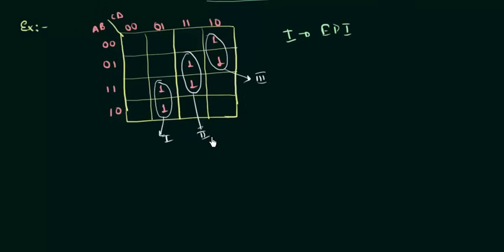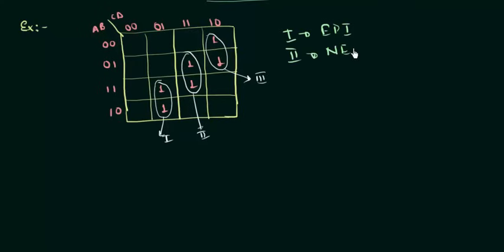Now let's see for the second group of ones. This is also a prime implicant because it is the largest possible group here. But it is not an essential prime implicant. Why? Because this one can easily be combined in another way, and this one can also easily be combined in another way. So there is not a single one in this group which cannot be combined in any other way. Therefore, it is not an essential prime implicant — it is a non-essential prime implicant.